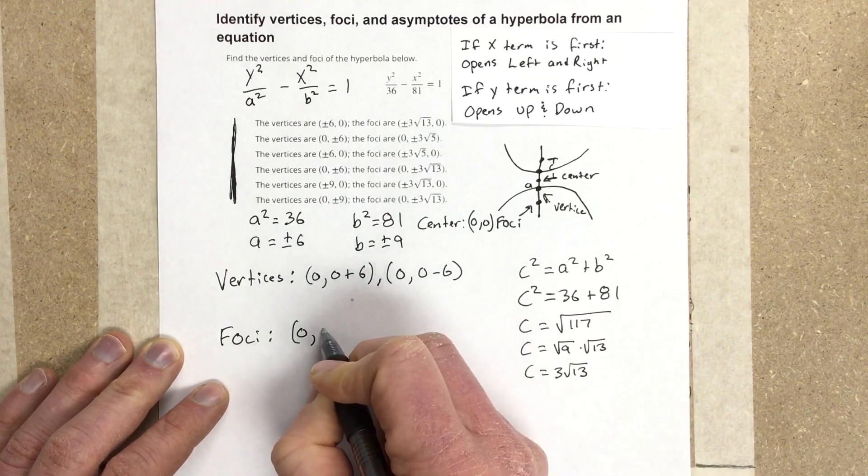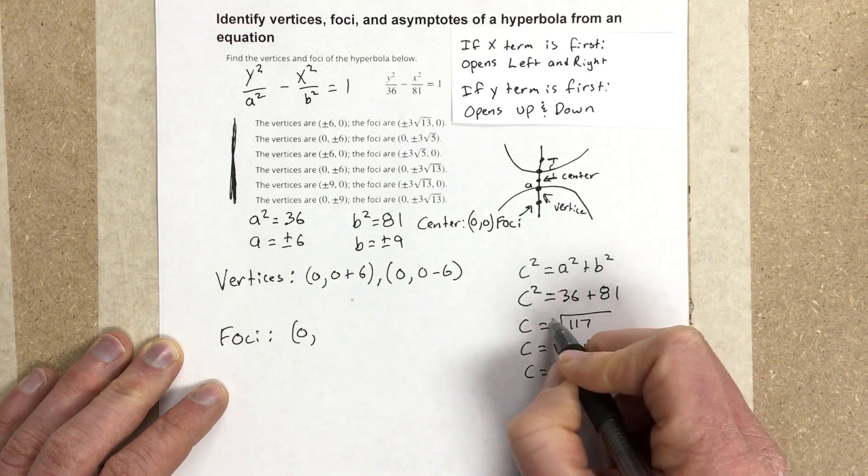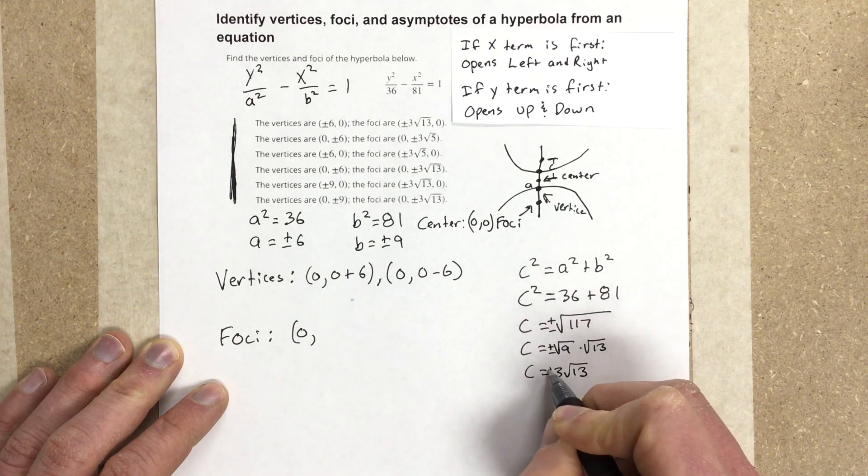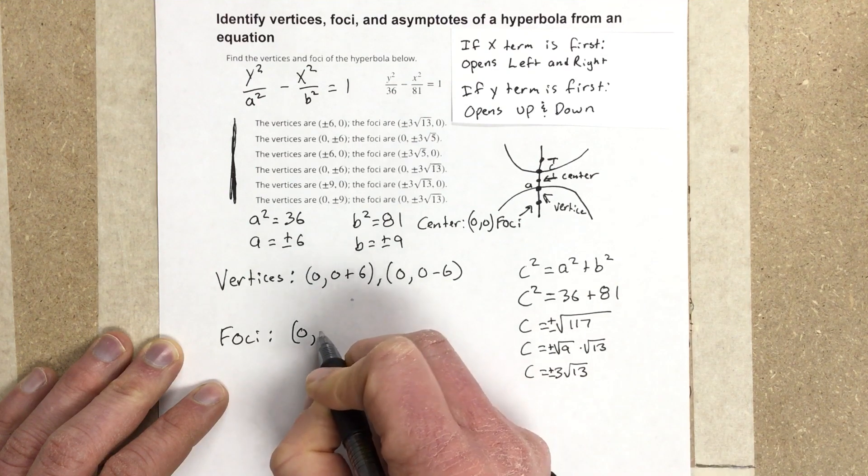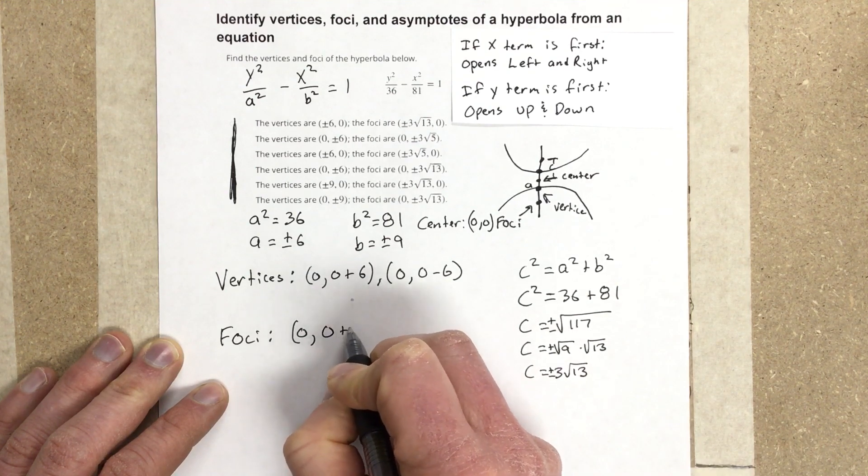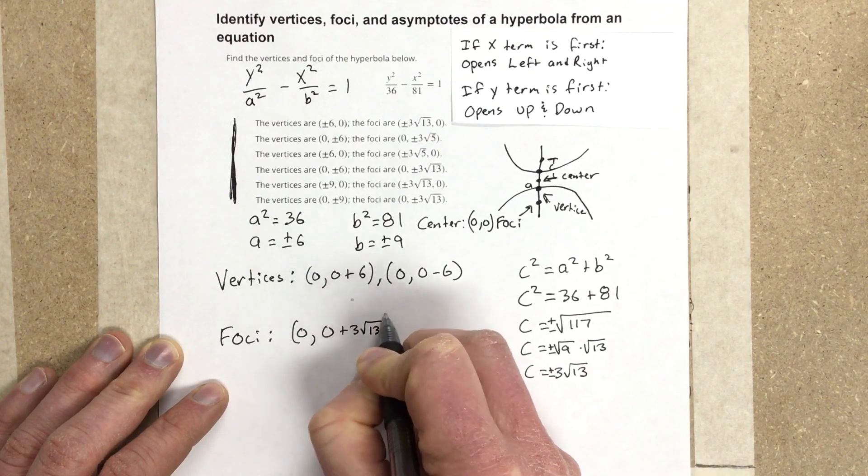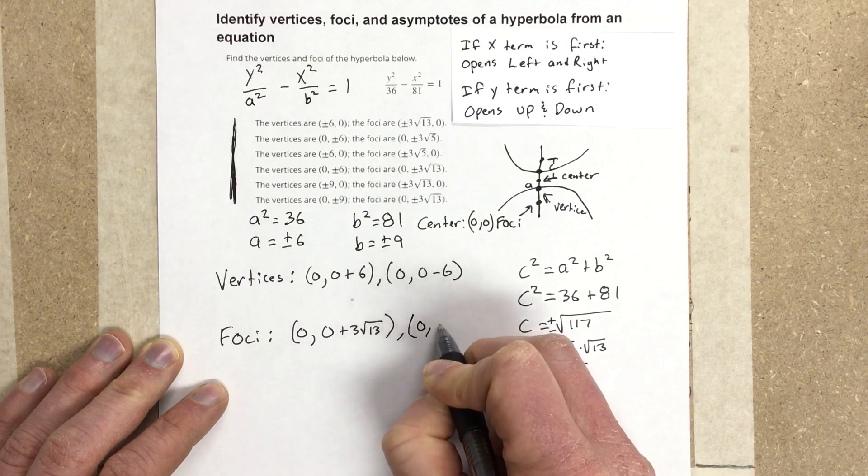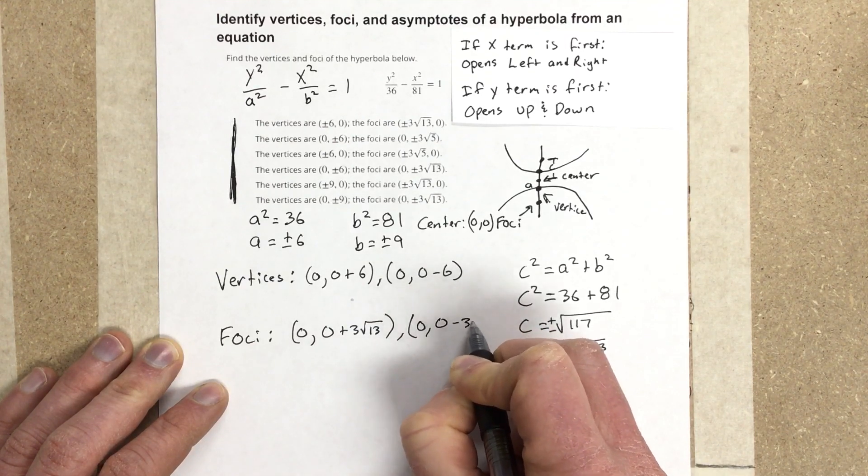I would take 0, and I forgot to put plus minus on this. So this would be 0, plus 3 root 13. And then we'd have comma 0, minus 3 root 13.